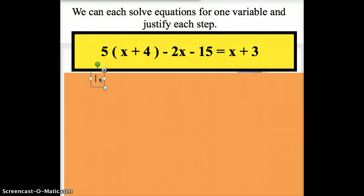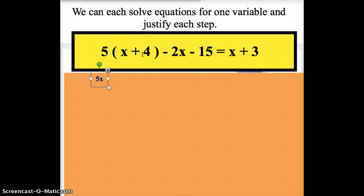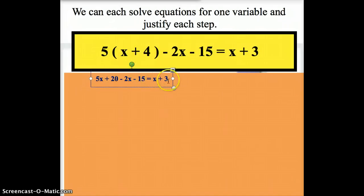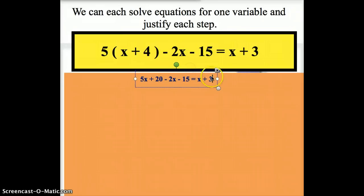Alright. Step number one. The first thing we want to do is we want to take care of the parentheses here. We need to distribute. So, step one is to distribute. When we distribute, you might notice that 5 times x is 5x. You might notice that 5 times 4 is going to be a positive 20. Now, the rest of this, the negative 2x, I haven't touched this yet, so negative 2x. And the negative 15, I haven't touched that yet, so that stays as well. And that equals x plus 3. Let's recenter that just a little bit. That's right in the middle there for us. Make sure you have that done. That's our first step.